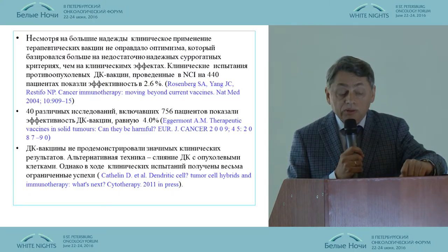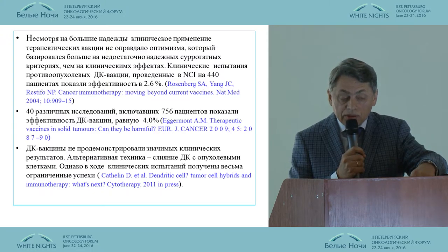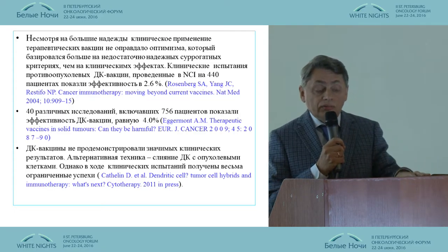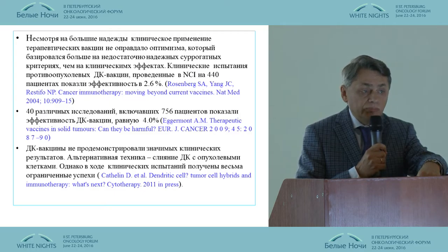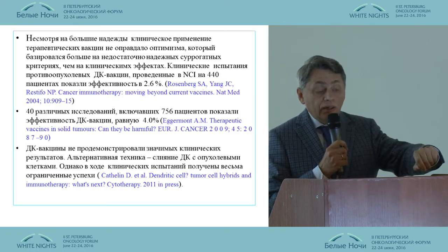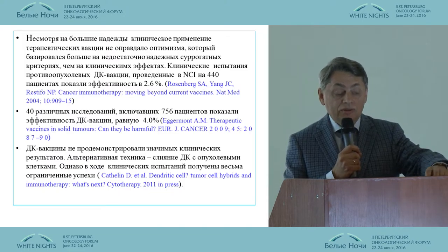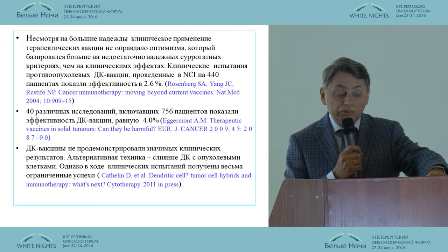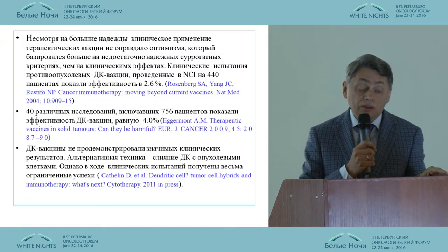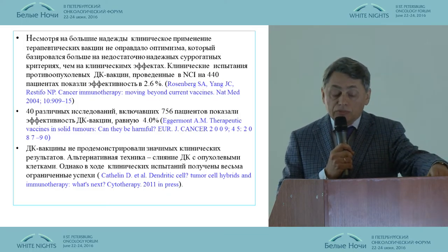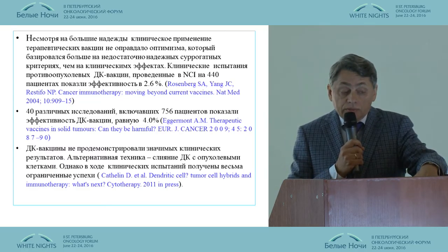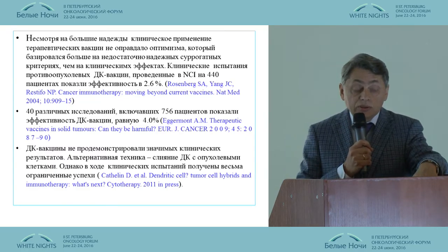We have talked about suppressor mechanisms related to inefficiency of dendritic cell vaccines. This is an important dimension, but may I carefully suggest a daring thought: the most important factor is absence of tumor-specific antigen and low expression of MHC. These are the two components necessary to fully implement the adaptive immunity response.